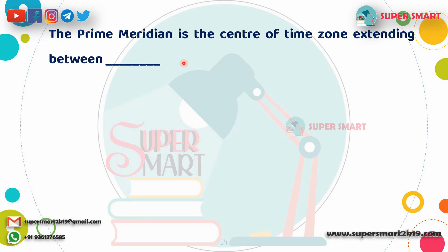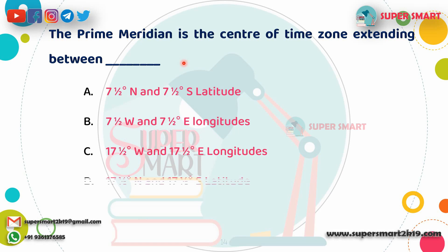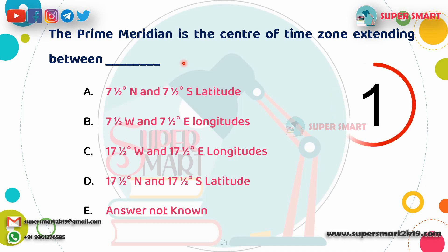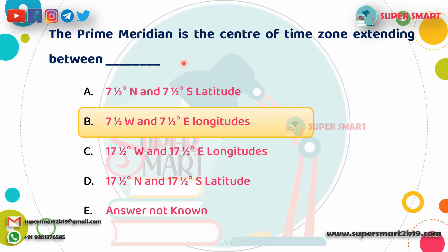Next question: The prime meridian is the center of a time zone extending between which longitudes? Answer: 7.5 degrees West to approximately 7.5 degrees East longitude.